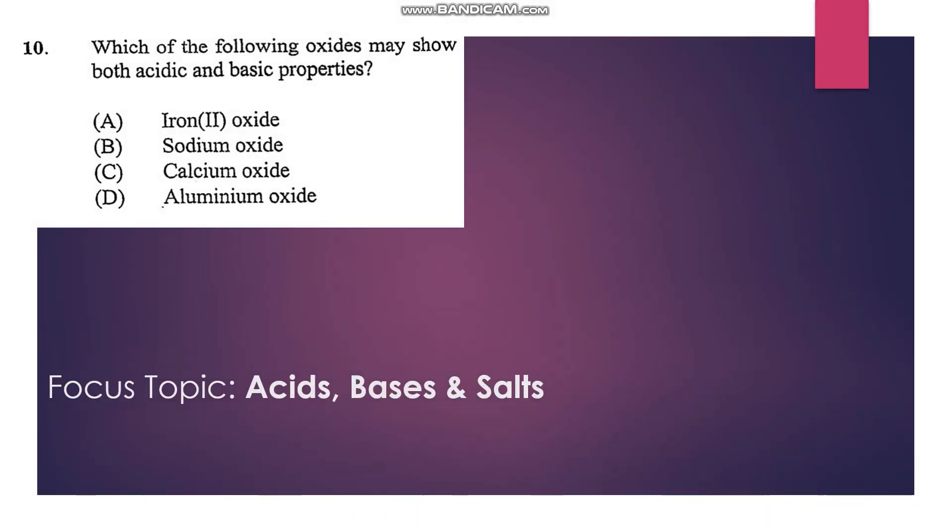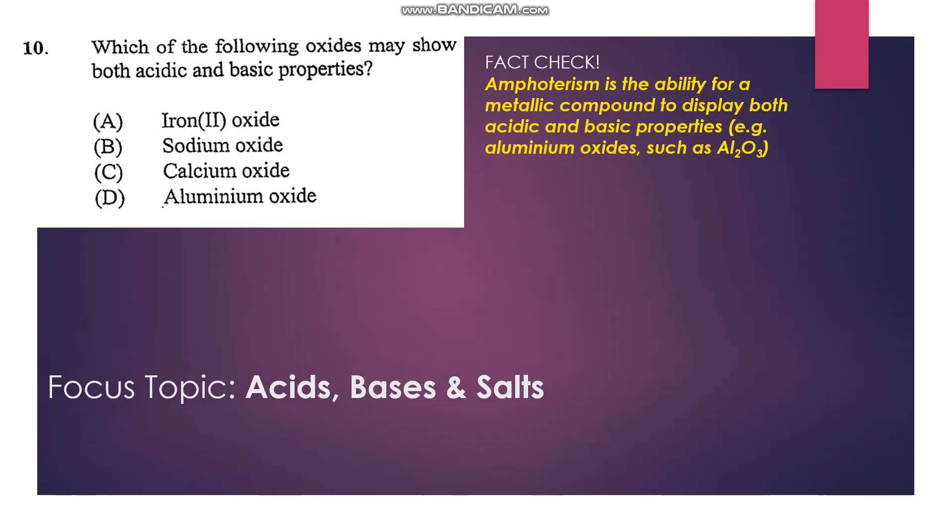Number 10: which of the following oxides may show both acidic and basic properties? Aluminum oxide is the only answer there, a group 3 element, so the answer is D.